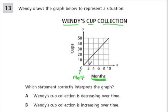Two months later, what happens? Well at two months, the y-axis here, going up and down, is the amount of cups that Wendy has.